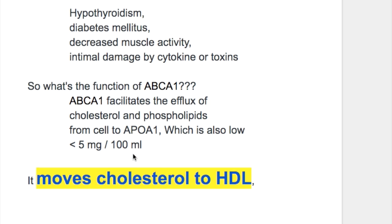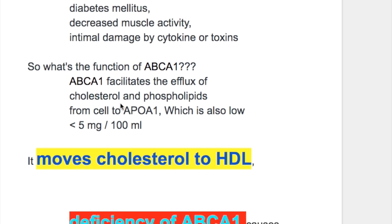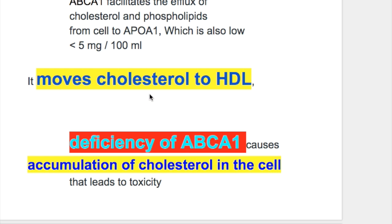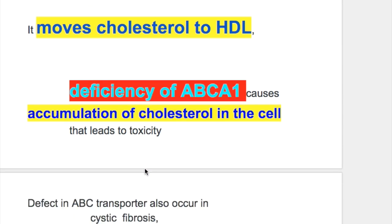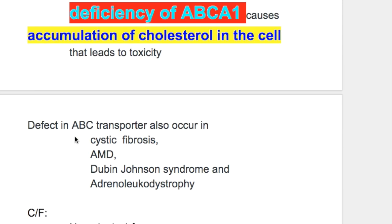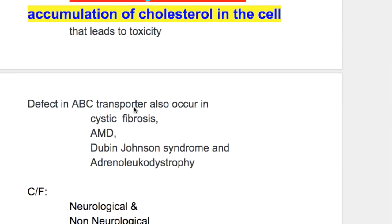ABCA1 facilitates the efflux of cholesterol and phospholipid from the cell to APOA1, bringing cholesterol to HDL to be removed from the cell to the liver. Deficiency of ABCA1 causes accumulation of cholesterol in the cell because cholesterol cannot be removed, and that leads to toxicity.